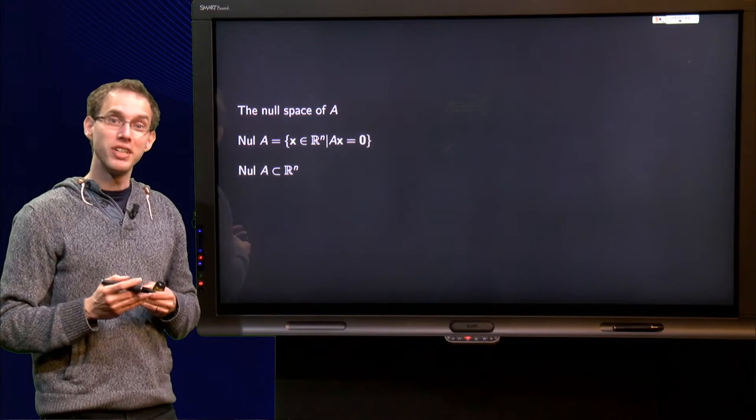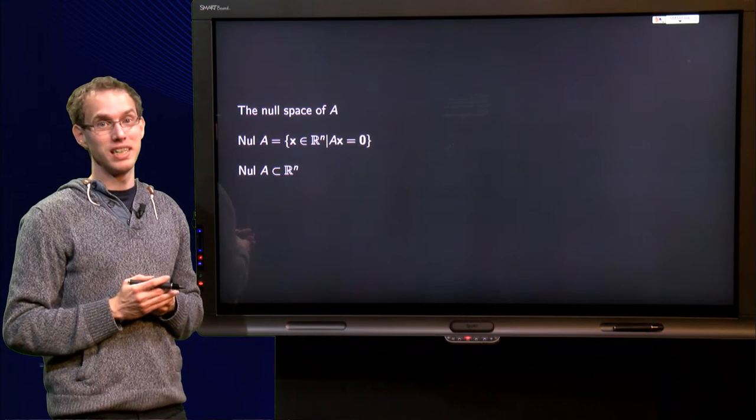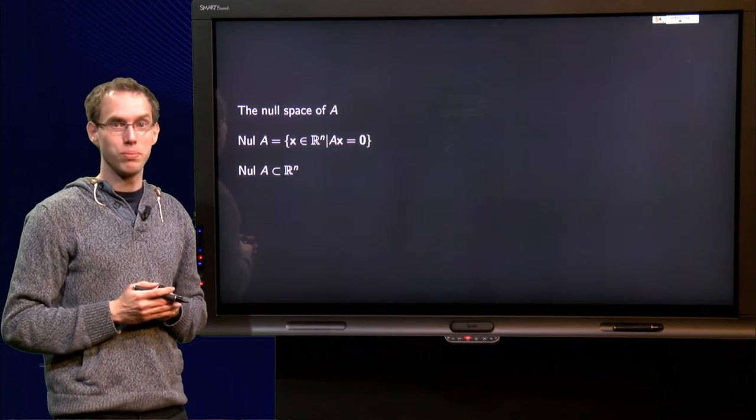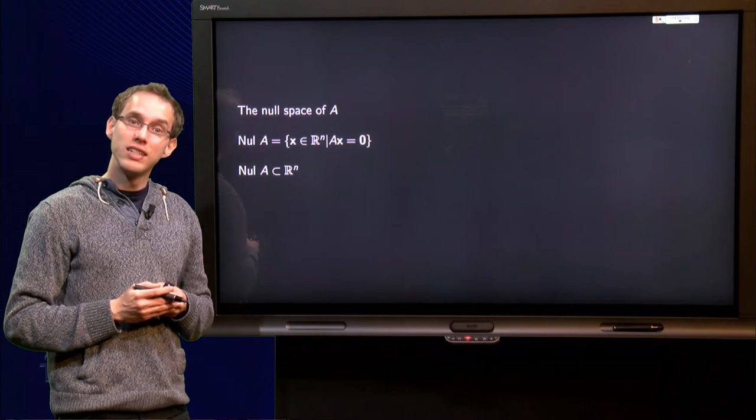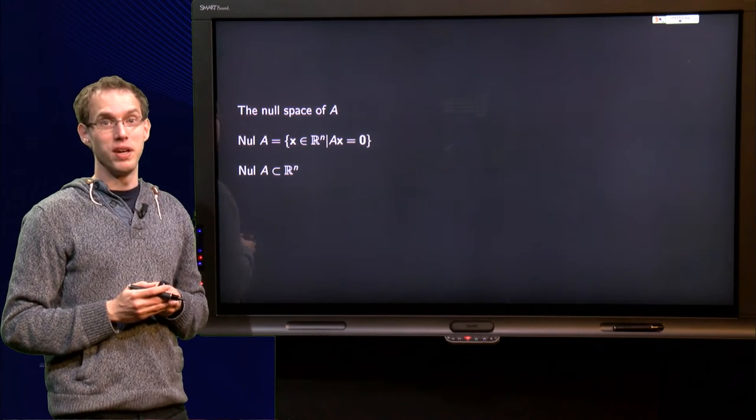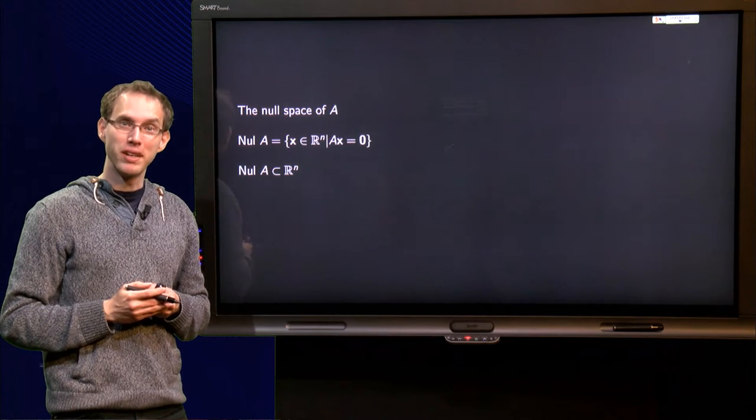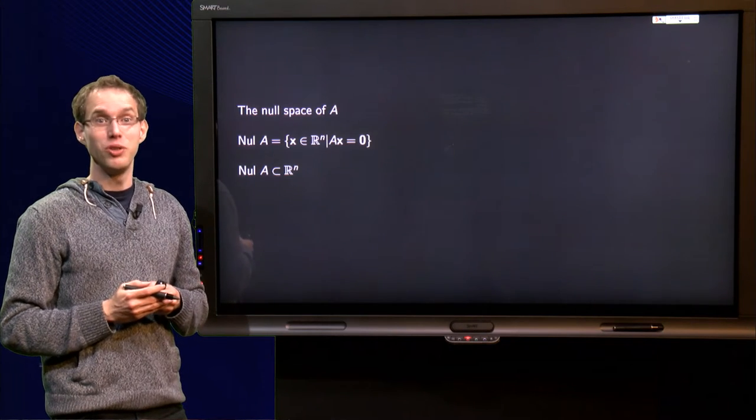We can also associate another subspace to a matrix, the so-called null space. This null space will, just as the column space, allow us to get a better feeling for what a subspace actually means.